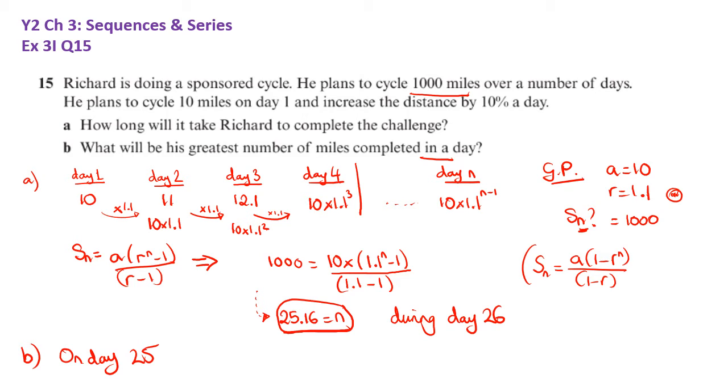And we plug that in to here. So 10 times 1.1 to the 25 minus 1 to the 24. And that will give us 98.5 miles. Again, it's the context of the question each time as to when you're using this n minus 1 or when you're not. And you get that from writing the sequence out in full.